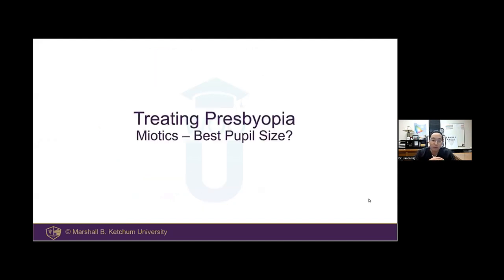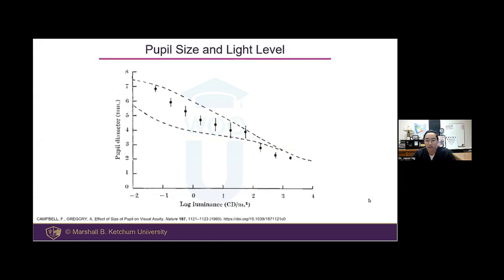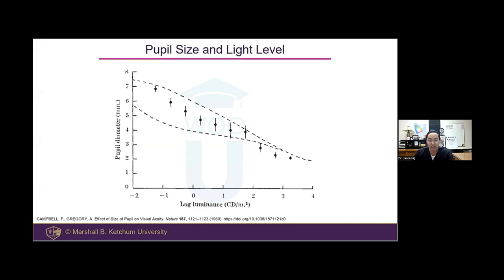Is there an ideal pupil size to get the job done for reading vision? Our pupils naturally change with light level, and more light always gives better vision function — better color vision, better visual acuity, better contrast sensitivity. More light also makes the pupil smaller, which naturally increases depth of field. So more light is always a win-win. Miiotics help even beyond that natural light response, in the same ways that light helps, miiotics help too.